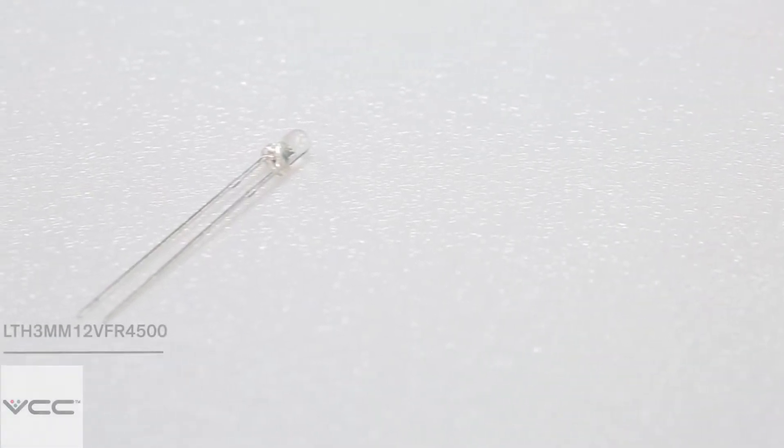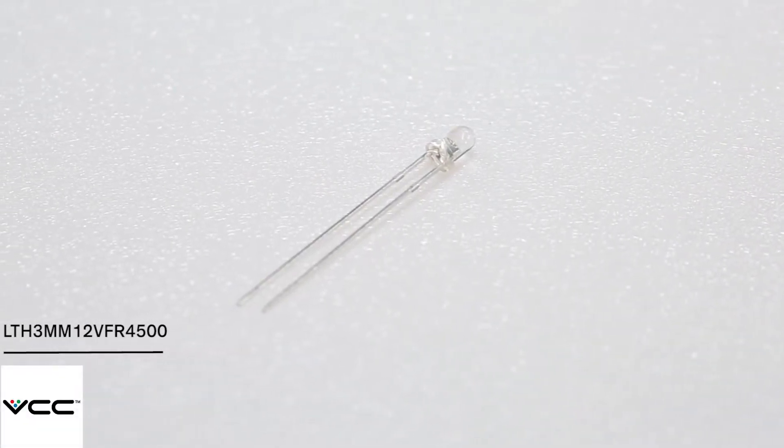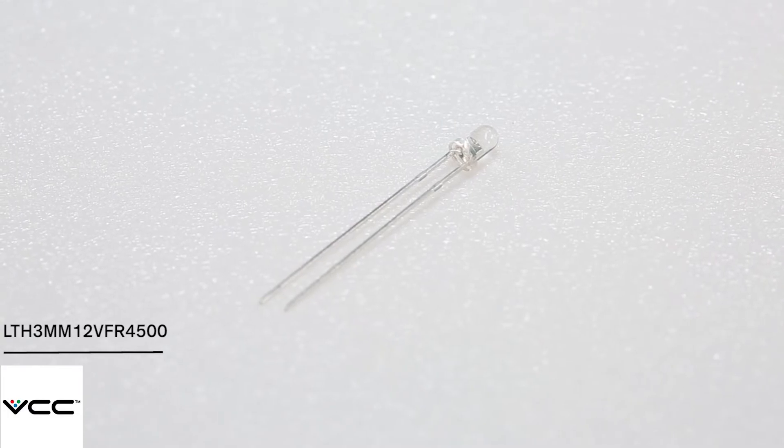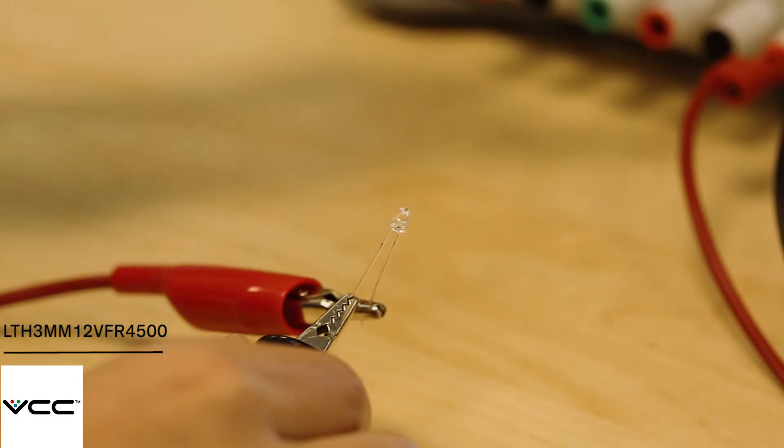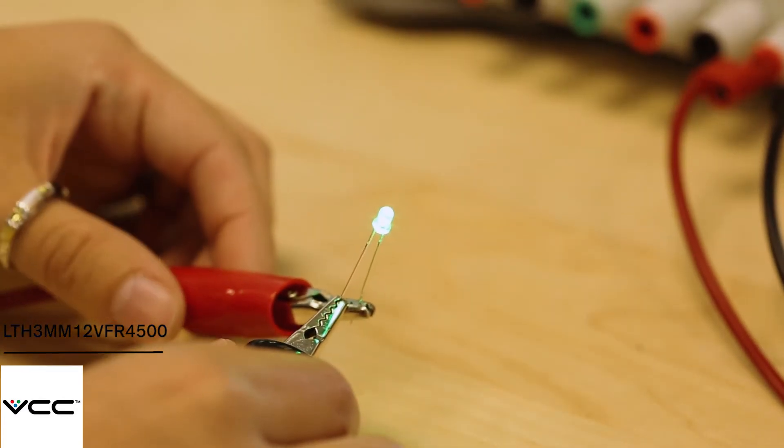With standard LEDs, you always need a resistor in series to limit the current flow. But with this family of high brightness LEDs from VCC, a built-in resistor provides 12V operation. This means you can streamline your design by connecting the LED directly to a 12V power supply without any additional components. These 3 or 5mm through-hole LEDs are available in all the standard colors.